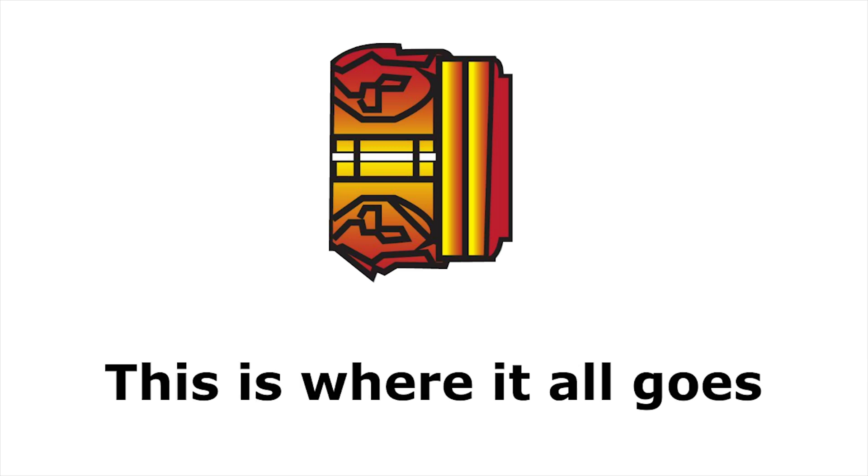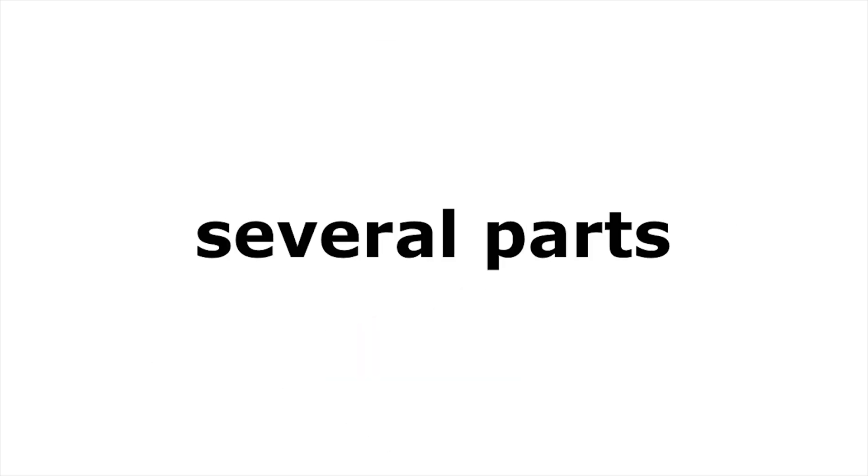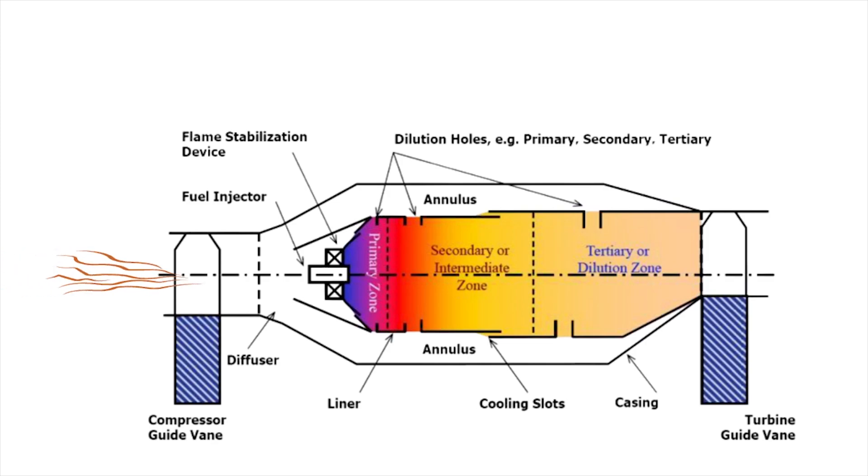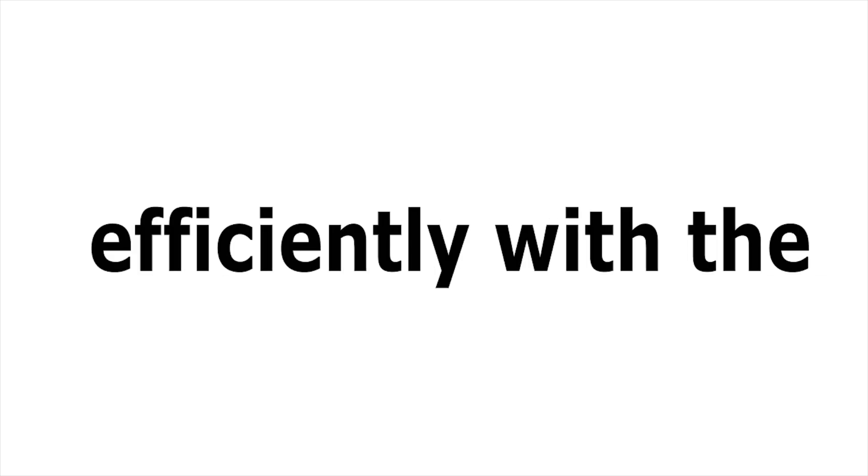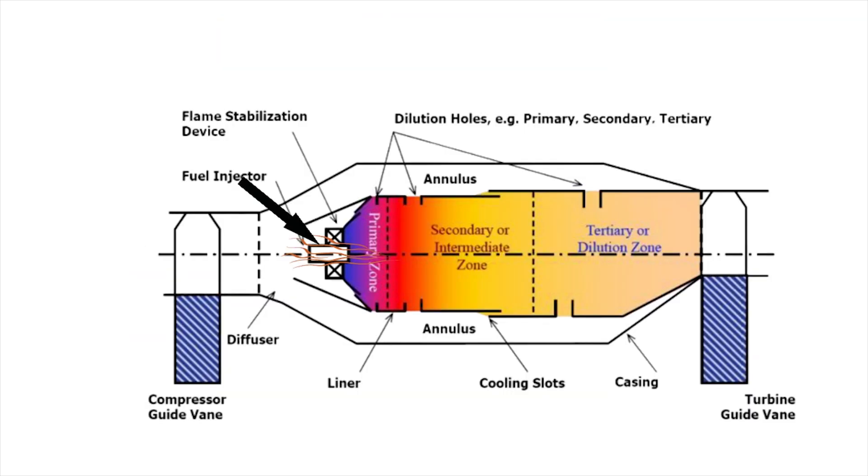The combustion chamber. This is where it all goes bang! The combustor itself also consists of several parts. First, the air flows through a diffuser which slows it down. The air is then passed into a dome and a swirler which creates a turbulence in the air to make it easier to mix more efficiently with the fuel. Then, fuel is introduced into the heated compressed air via a fuel injector.